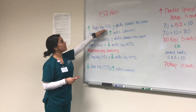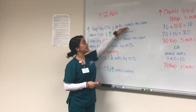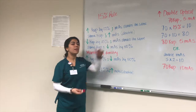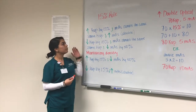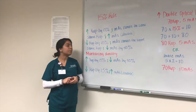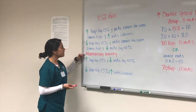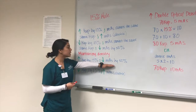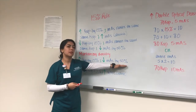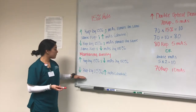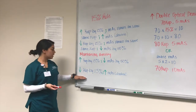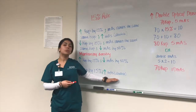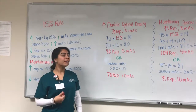Vice versa, if you want to decrease density, you do the opposite. To maintain optical density when increasing kVp by 15, you must decrease your mAs by 50%. Alternatively, to decrease density, decrease the kVp by 15 and double your mAs.